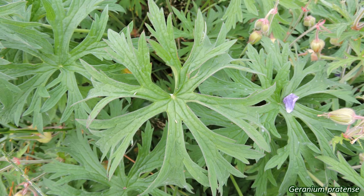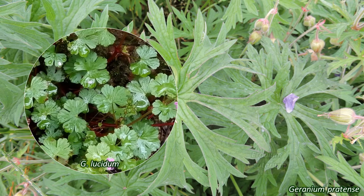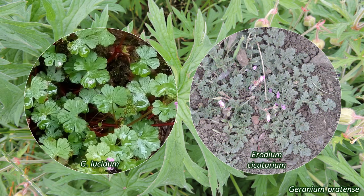Leaves of Geraniaceae are arranged alternately on the stems, and they have a distinctive structure called a stipule where they join onto the stem — these resemble little leaves. The leaves themselves are lobed or divided and often palmate, like this Geranium pratense and Geranium lucidum. Erodium, like Erodium cicutarium, have pinnate leaves. The stems tend to be hairy to varying degrees, along with the carpels and sometimes the leaves.